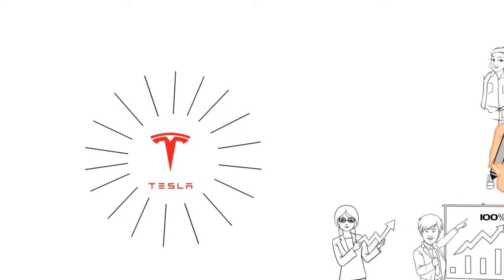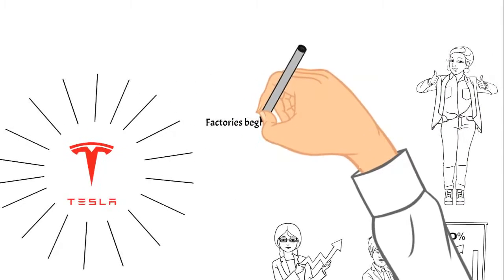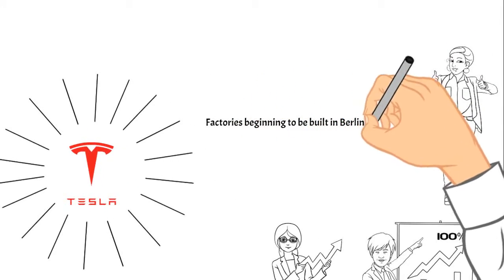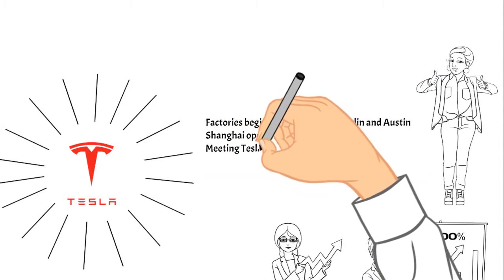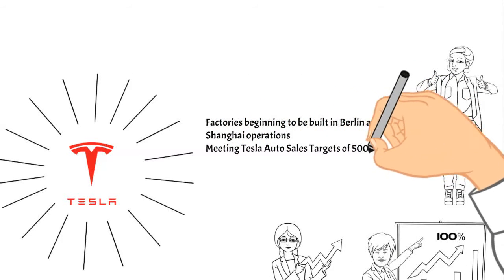Factories in Berlin and Austin beginning to be built, expanding operations to Shanghai, and achieving their goal of selling about 500,000 cars in 2020, more and more analysts are saying that Tesla is looking outstanding.